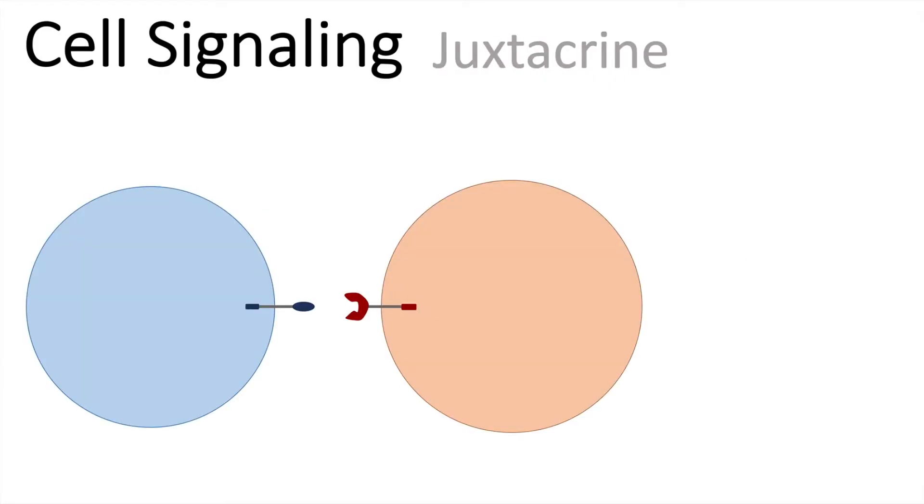Another form of cell communication is juxtacrine signaling. In this case, it's all dependent on contact. We don't have the secretion of a signaling molecule. Instead, we have a membrane-bound signaling molecule on our donor cell. The juxtacrine signaling is contact-dependent.